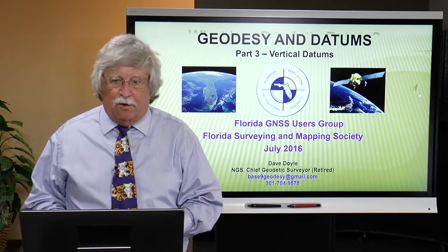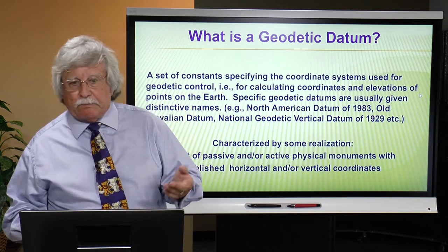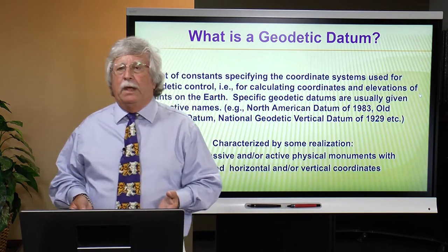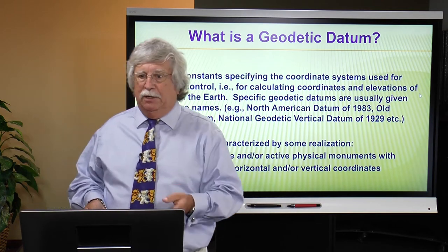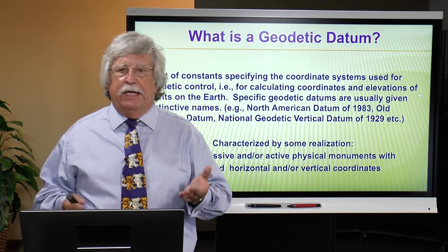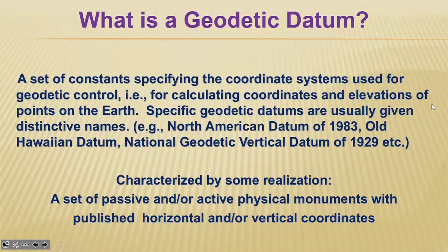So let's start off — just to rehash — what is a geodetic datum? As mentioned in previous sessions, a geodetic datum is again just a set of constants. In the horizontal datum, I talked about the orientation of the datum, the location of the monument, the size and shape of the earth.